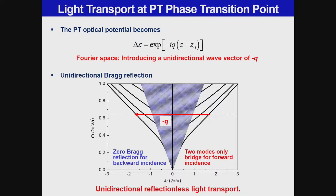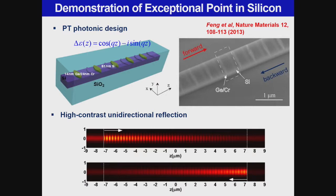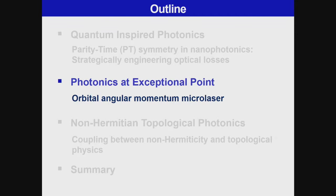We demonstrated this exceptional point modulation in a silicon waveguide. A sinusoidal silicon structure deposited on top of the waveguide mimics the sinusoidal function modulation, providing the unidirectional exception point modulation. In the forward direction, we see strong reflection at the interface. In the backward direction, however, reflection cannot be constructed and we see almost nothing reflected. This raises the question: how can we convert this into a practical application?